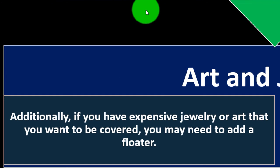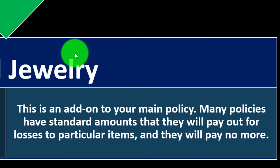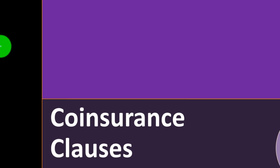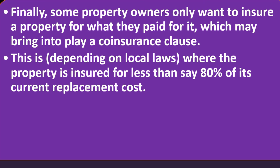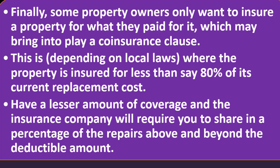Art and jewelry: If you have expensive jewelry or art you want covered, you may need to add a floater — an add-on to your main policy. Many policies have standard maximum amounts they will pay out for losses to particular items and will pay no more. Co-insurance clauses: Some property owners only want to insure a property for what they paid for it, which may bring into play a co-insurance clause. Depending on local laws, if the property is insured for less than, say, 80% of its current replacement cost, the insurance company will require you to share in a percentage of the repairs above and beyond the deductible amount.